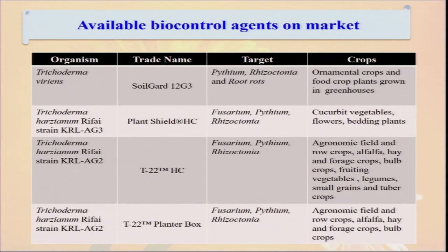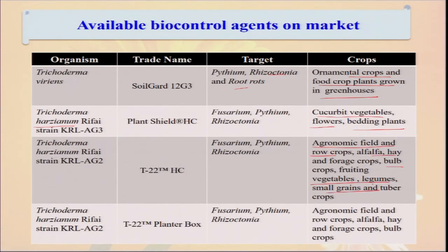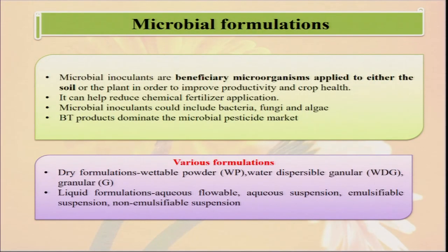If we see the different types of biocontrol agents available in the market and which crops they are generally recommended for: one is Trichoderma — Trichoderma is one of the most important biocontrol agents, with targets including Rhizoctonia in soft fruit, ornamental crops, and food growth crops in greenhouses. Trichoderma harzianum is used for cucurbit vegetables, flowers, and bedding plants. Similarly, Trichoderma harzianum in different species is used for most agronomic field and row crops, alfalfa, forage crops, vegetables, and legumes. So Trichoderma has a very high host range and that is why we are always promoting the use of this biocontrol — mainly Trichoderma virens or Trichoderma harzianum.